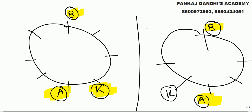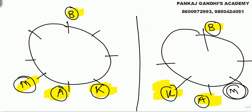Ajay ke saath aur kuch diya hai kya? No one sits between Ajay and Mahi — Ajay aur Mahi ajubaju mein hai. Toh agar Kunal idhar rahega toh is case mein Mahi yahan aayega, aur is case mein agar Ajay yahan hai aur Kunal yahan hai toh Mahi yahan pe aayega. Trick hai — daro nahi. Jo diya hai lete ja. Two possible cases we are trying.